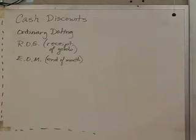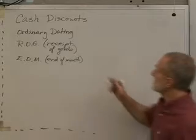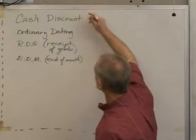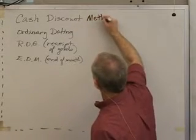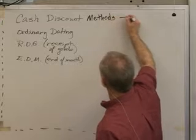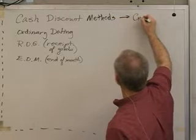The only difference among these three methods, these are cash discount methods. Another thing that it's called is credit terms.